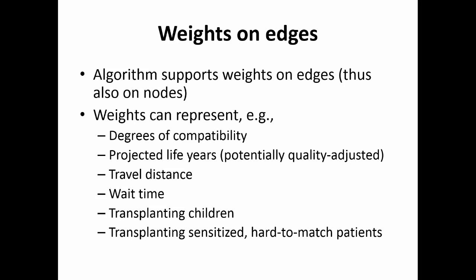Weights on edges matter because not all transplants are equally good. Policy committees — including medical people, ethicists, and economists — debate the goal of these exchanges and how to instantiate that goal into edge weights. Factors affecting weights include degrees of HLA compatibility (six-way, five-way, four-way), projected life years, travel distance, wait time, transplanting children, and transplanting highly sensitized hard-to-match patients who have few other options. There are strong opinions about fairness-efficiency trade-offs involved.